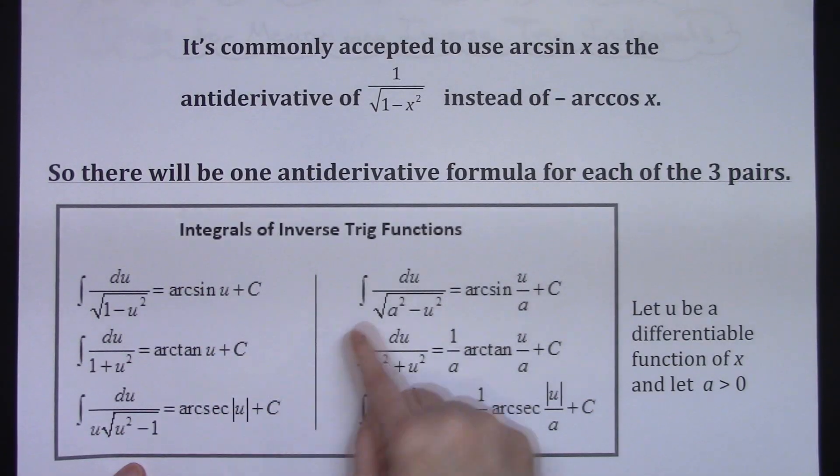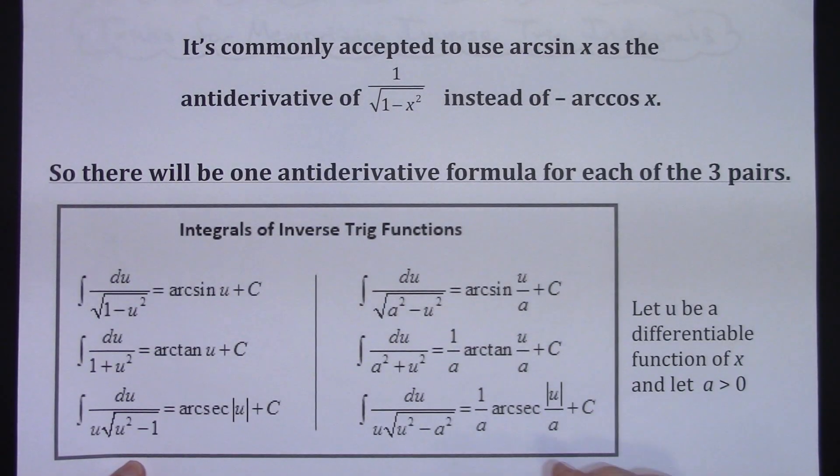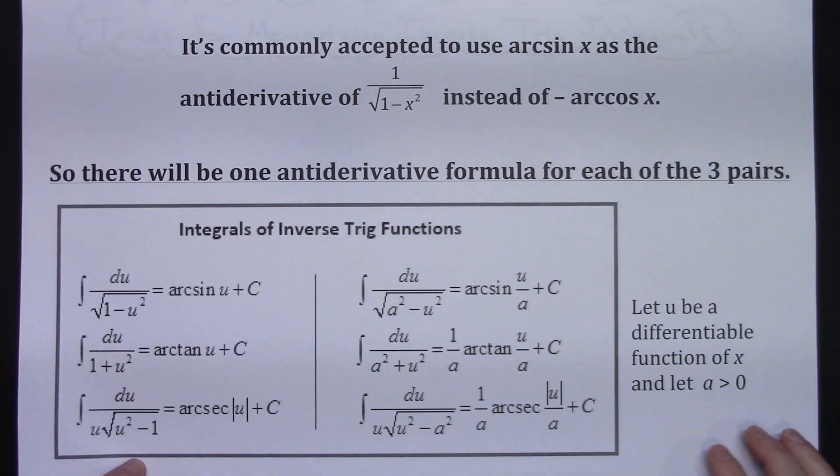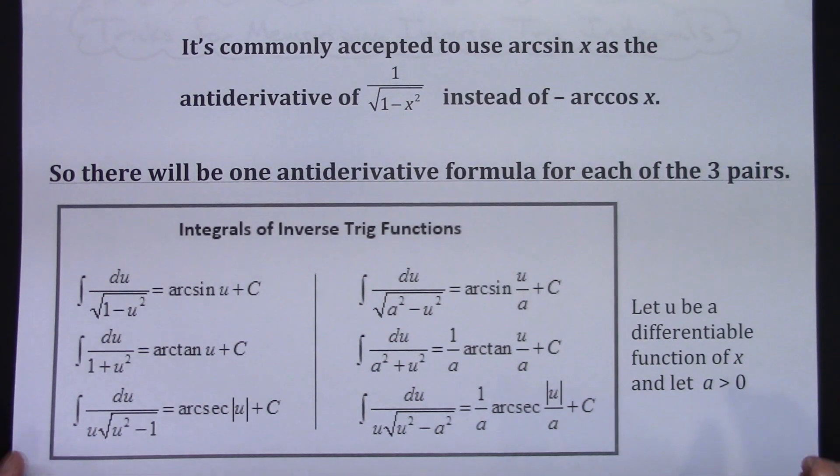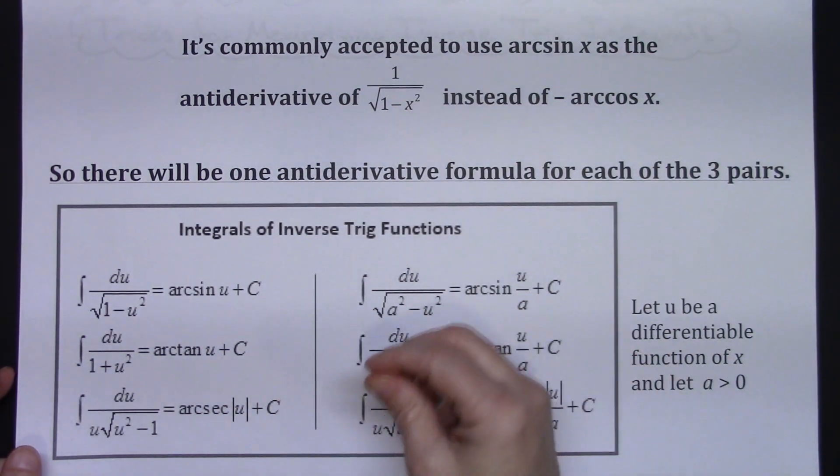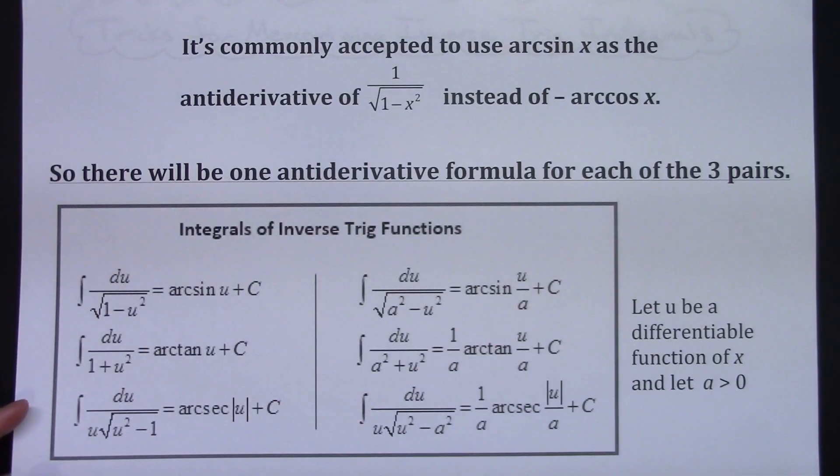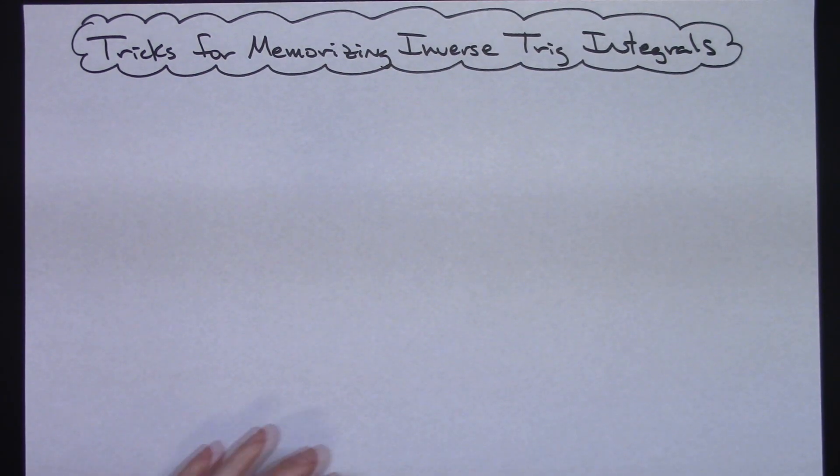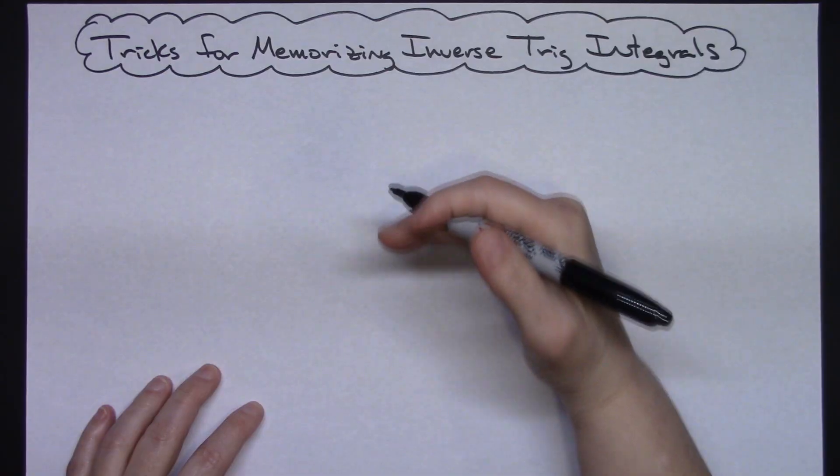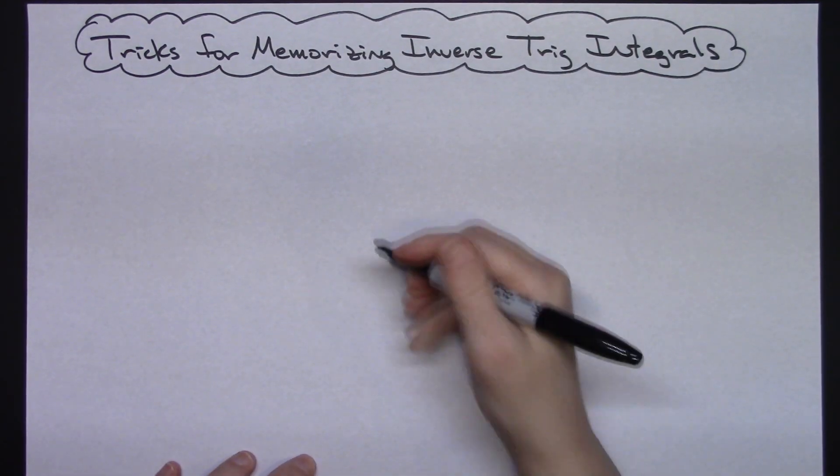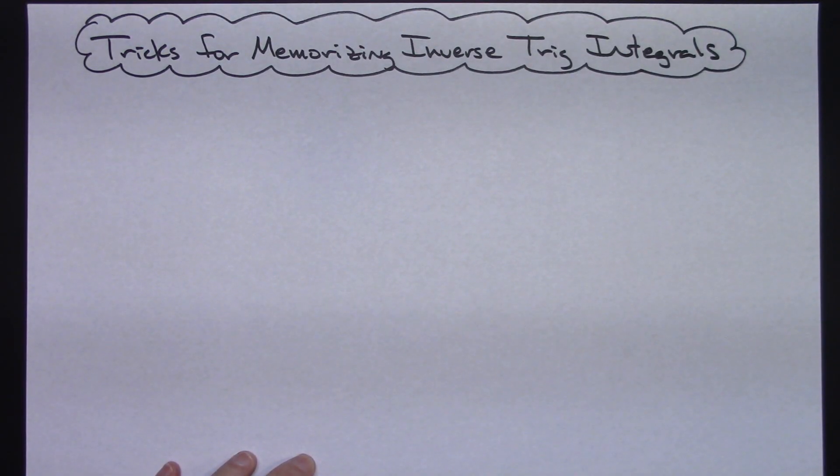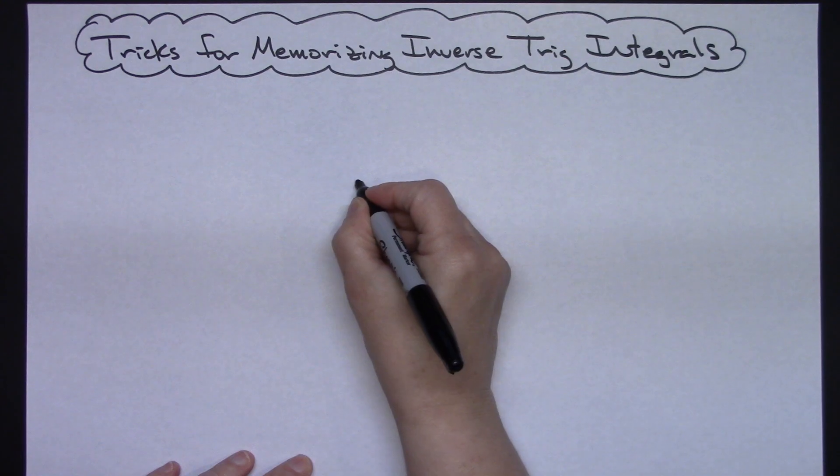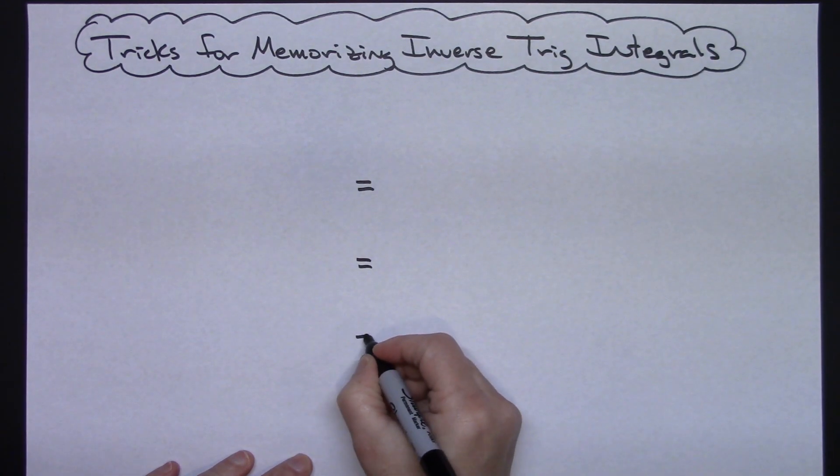And this formula's got the ones, this formula's got the a's. I do use formulas with u where u represents a differential function of x and a is just greater than zero. But I'm going to focus on these and just touch on a real quick way on how you could jot down tricks that you can use to jot down these three on a test if you need them for reference. And I don't think it's too hard to remember that we've got the sine, tangent, secant going on in all three.